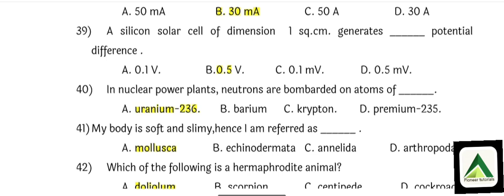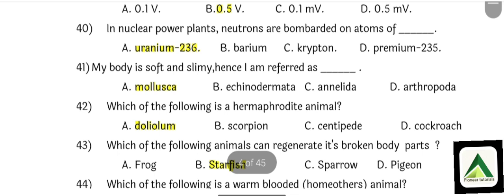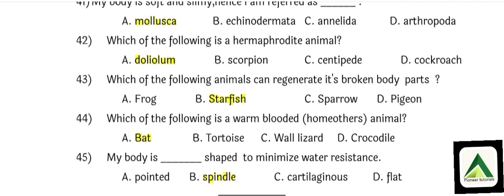Uranium 235 is the correct answer — it should be Uranium 235. Question number 41: My body is soft and slimy, hence I am referred to as option number A: Mollusca. Question number 42: Which of the following is a hermaphrodite animal? That is option number A: Dolulum.